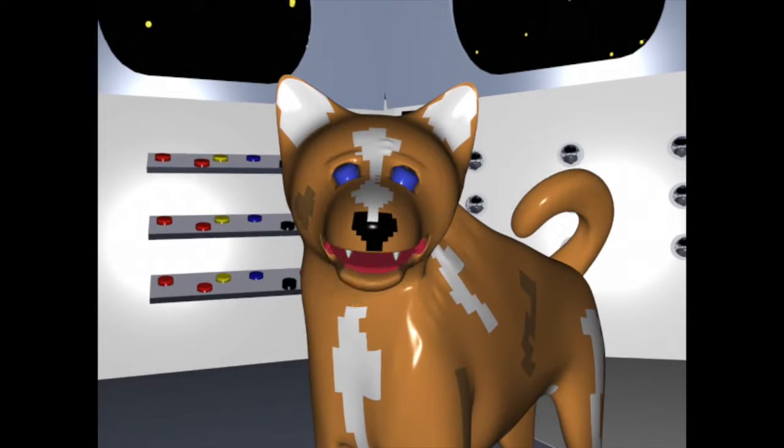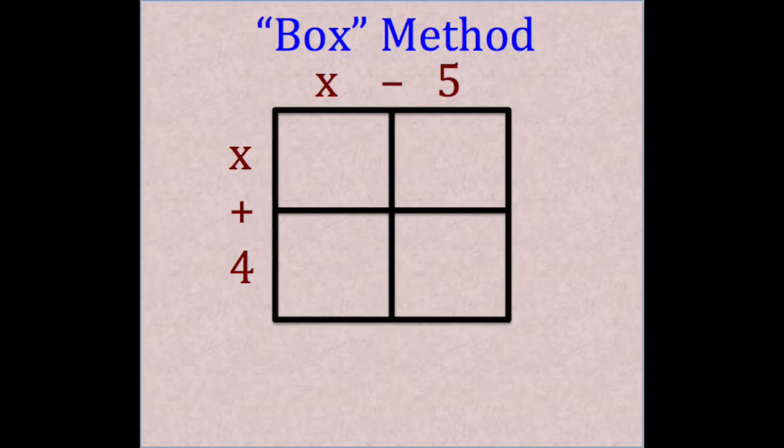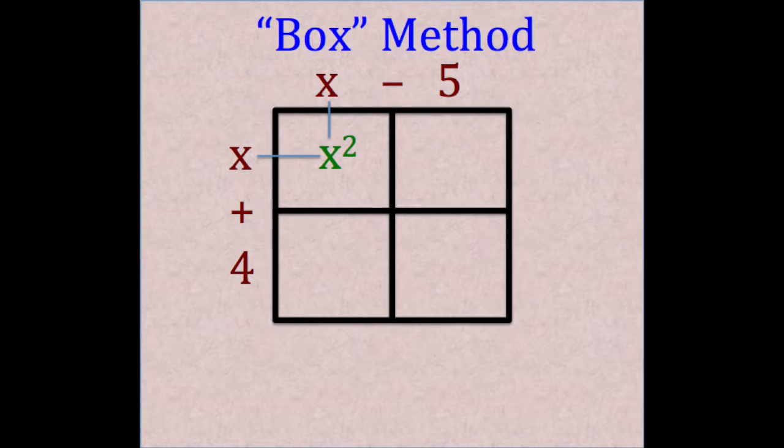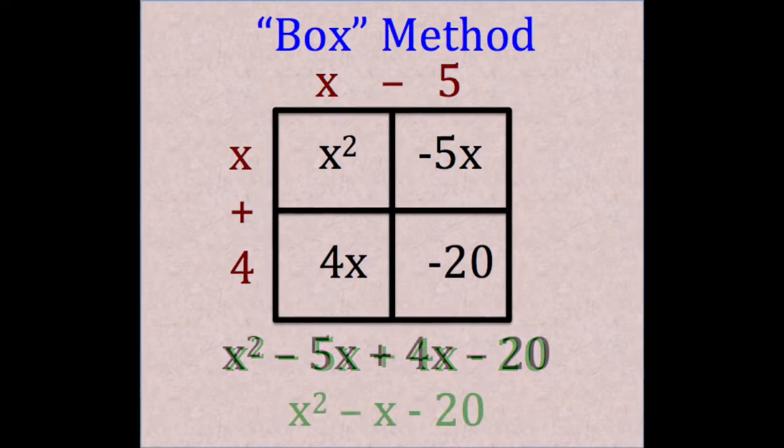Let's see another example. Once again, we take our two binomials and line them on the top and side of the box, and we multiply the parts that intersect in the empty spaces. Then we add our like terms to get our final answer.